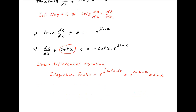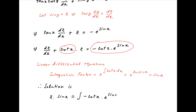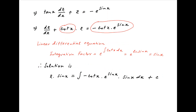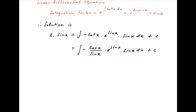Therefore, the solution of the linear differential equation is given by z times sin x is equal to the integral of the right-hand side, which is minus cot x times e raised to the power sin x times the integration factor sin x dx plus the constant of integration. The right-hand side is equal to integral of minus cos x times e raised to the power sin x times sin x dx plus c. Sin x cancels and therefore the right-hand side is equal to minus integral cos x times e raised to the power sin x dx plus c.